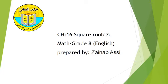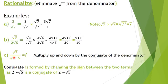Salam alaikum. In this video we will talk about rationalization and we will define conjugate. Rationalize means how to eliminate or remove the radical from the denominator of a fraction. I want the value of this fraction without a radical in the denominator. To do that, I will multiply up and down by the radical.